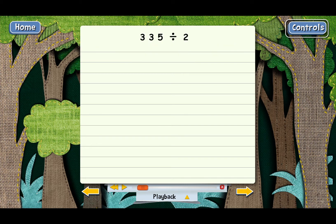335 divided by 2. We start out by putting 335 inside the division box, and 2 is the divisor, so it goes on the outside.